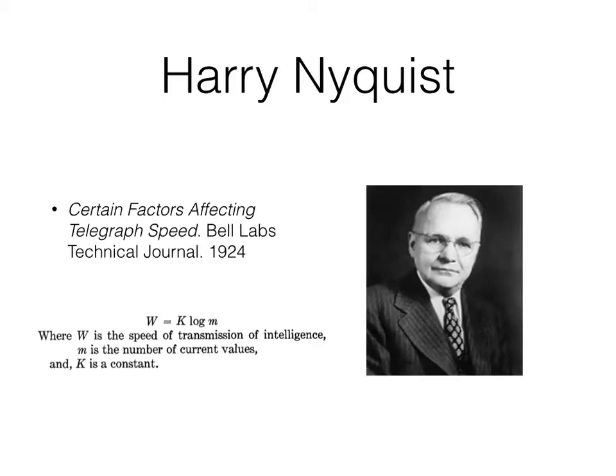In 1924, Harry Nyquist, a researcher at AT&T, formulated an equation describing the speed at which symbols — for example, letters in Morse code — can be transmitted over a telegraph line.